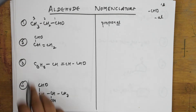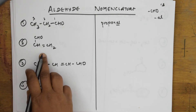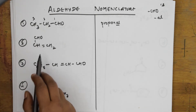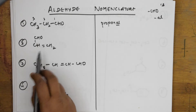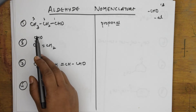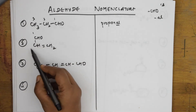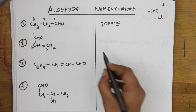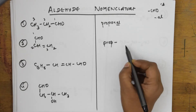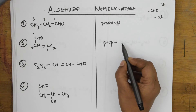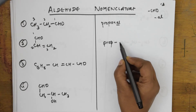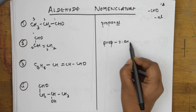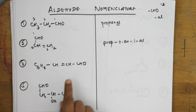In the second case, you have an aldehyde group as well as an alkene. So the aldehyde functional group gets carbon one, this is two, three — so this is propan-. In which position is the alkene? It is at two. So it is prop-2-en-1-al. This is how you write it.